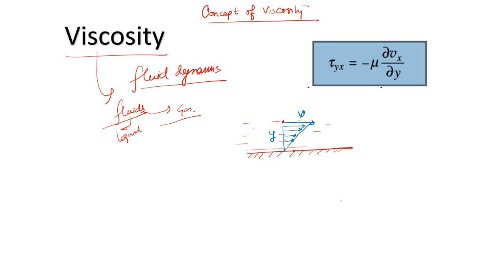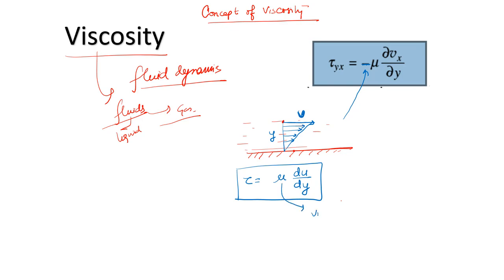At different heights y, the velocity will change. This is described in terms of viscosity: the amount of shear stress is directly proportional to the rate of change of velocity with height. We put a minus sign in this formula because the shear stress acts opposite to the direction of motion of the fluid.